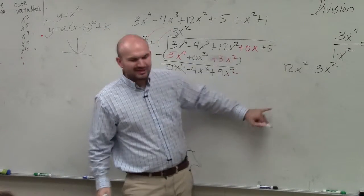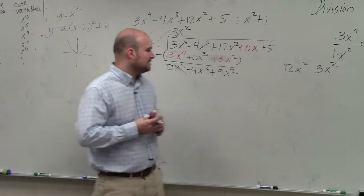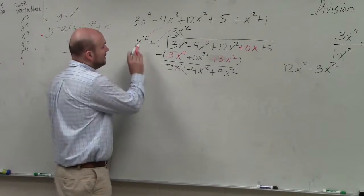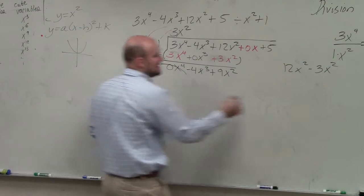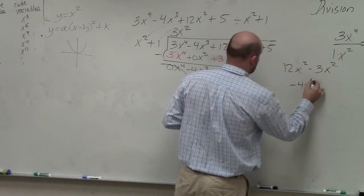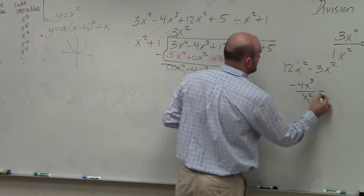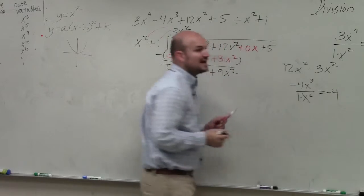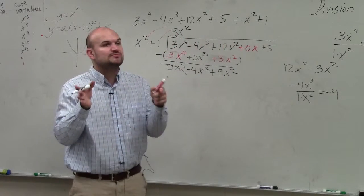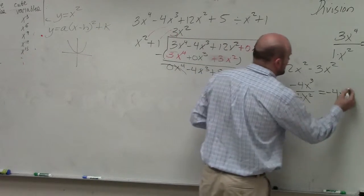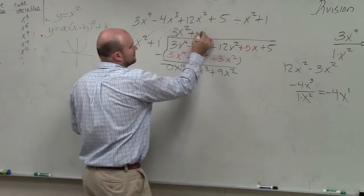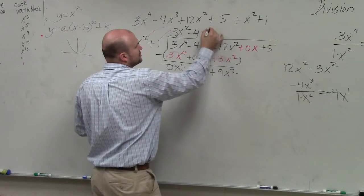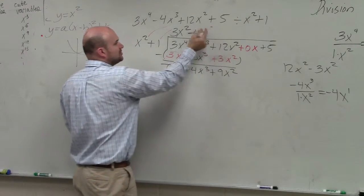You could subtract or bring these down, but unless you need them, I don't really worry to bring them down. So now we do the same process again. x squared divides into negative 4x cubed how many times? So negative 4x cubed divided by x squared. Well, 1 goes into negative 4, negative 4 times. x squared goes into x cubed—remember, subtract the powers: 3 minus 2 is 1, so that's x to the first. Oops, that's a minus. Minus 4x to the first power.